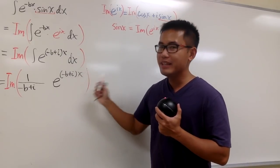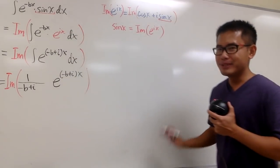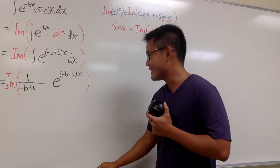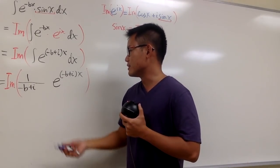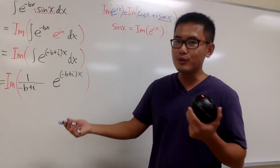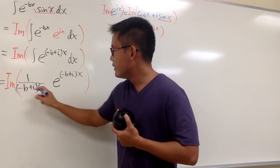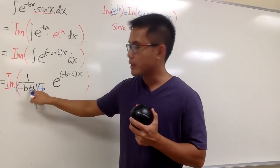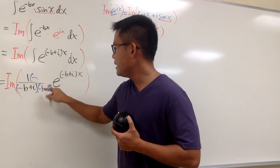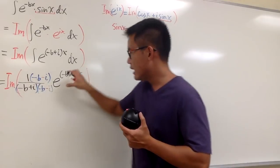We did the integral already — don't put down the plus C yet; we are not done with the original integral. Put down the plus C all the way at the end. Now, 1 over (negative b plus i) is a complex number but not in standard form. All we have to do is multiply the top and bottom by the conjugate, which is negative b minus i.